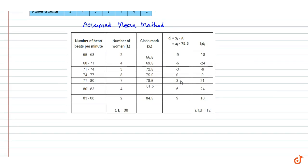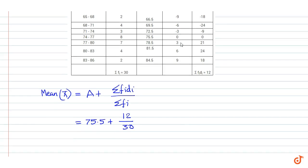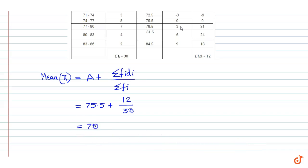So the mean is given by x bar equals A plus sigma fi di divided by sigma fi. This equals 75.5 plus 12 divided by 30, which equals 75.5 plus 0.4, which equals 75.9.